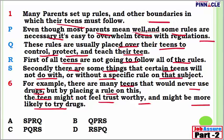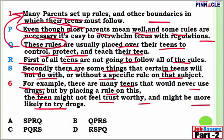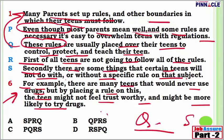Now this is the para jumble. Let us look at the keywords. Here we have 'even though', then 'these rules', 'this', 'first', 'second', 'for example' — many of these are there. Now let us try to put it in order. Many parents set up rules — which rules are we referring to in 'these rules'? We are referring to the rules set up by parents. These rules are usually placed over their teens to control, protect and teach. Probably Q is going to be my first one. The sixth sentence gives an example preceded by 'there are some things that certain teens will not do with or without a specific rule on that subject.' So S is going to be my last one.